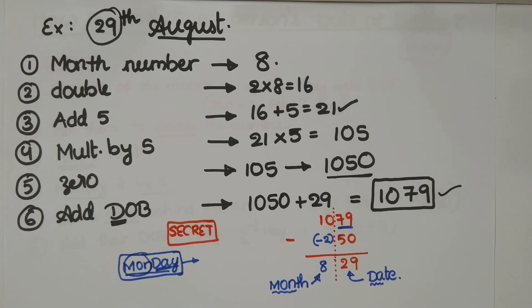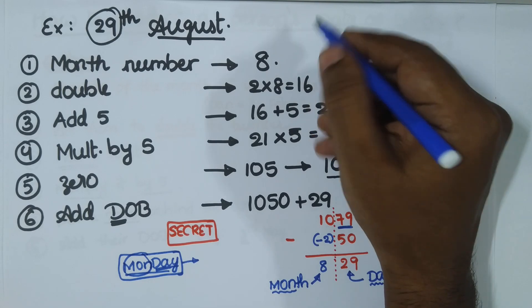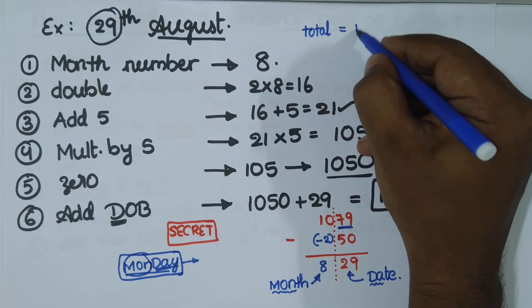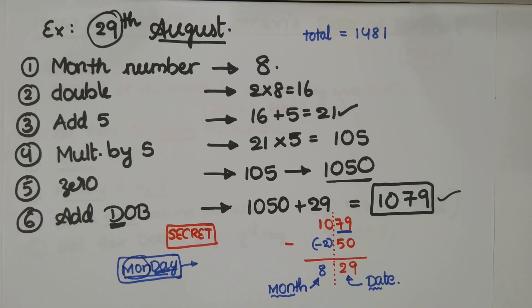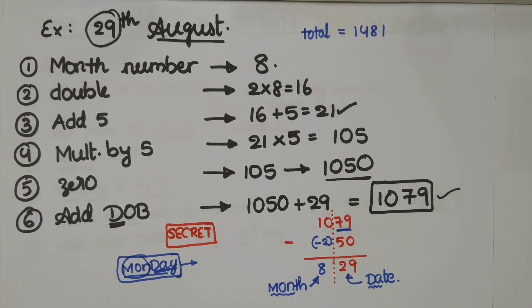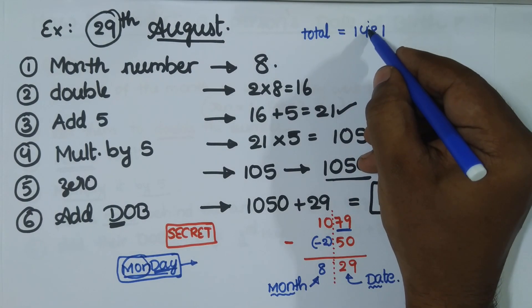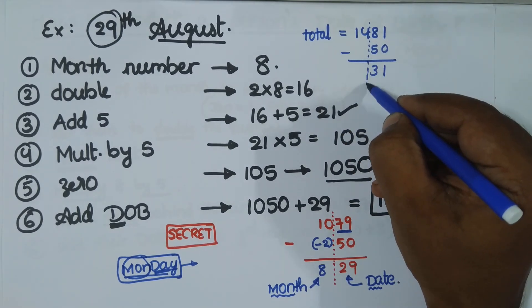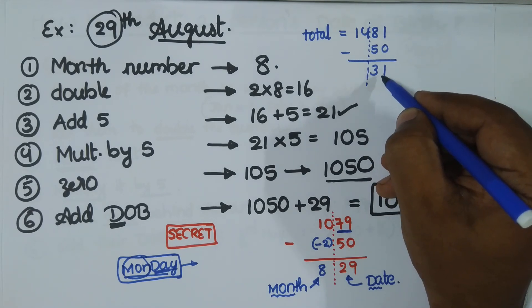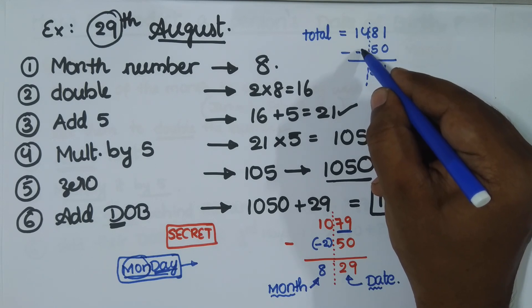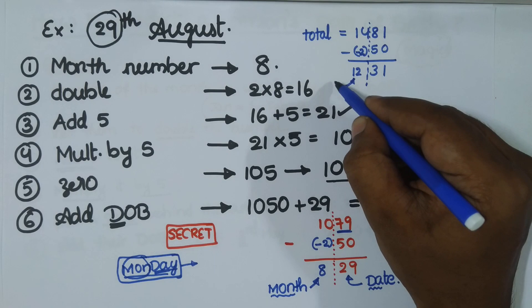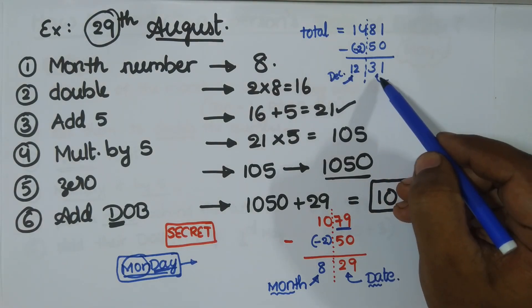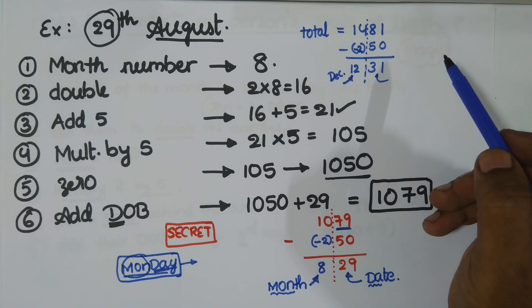On similar lines, if somebody told us, if somebody gave this total, for example, 1481. If somebody gave this total to us, now, you must tell their date of birth from this. What you do? End of the day, simply, segregate this, subtract 50 from last two digits. What you get now? 31. So, he was born on some month, but on 31st. And now, if you want to know the month, subtract 2 from this 14, this is 12. What is 12 now? December, right? That means, this fellow was born on 31st December. Very simple, right?